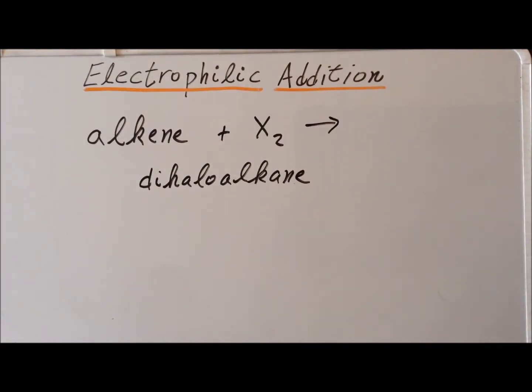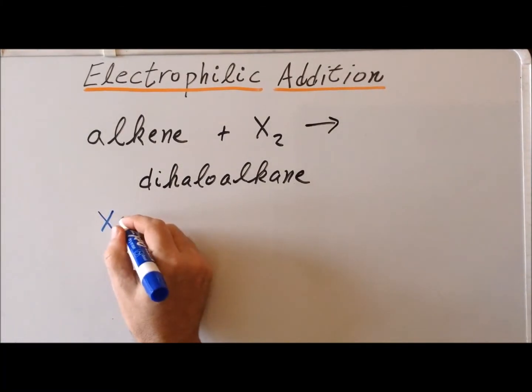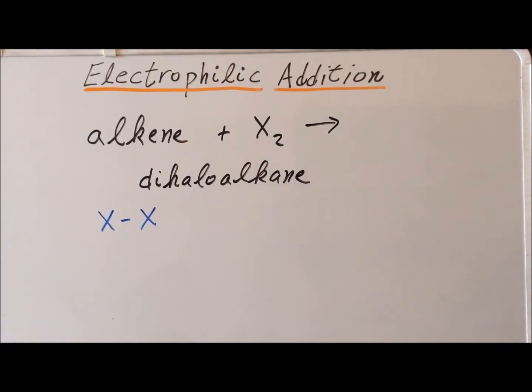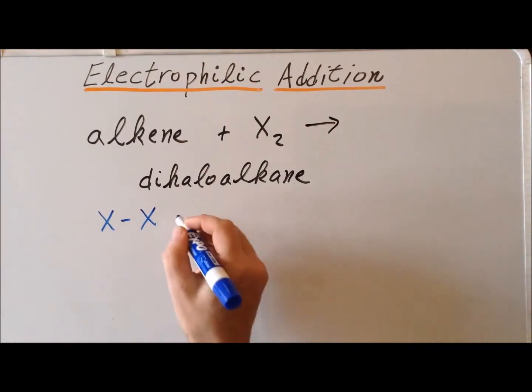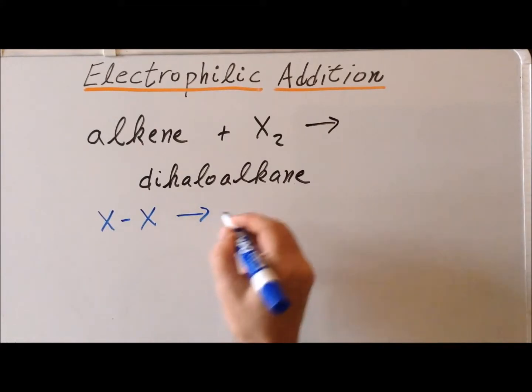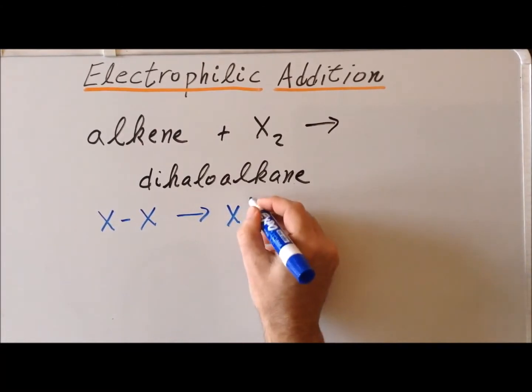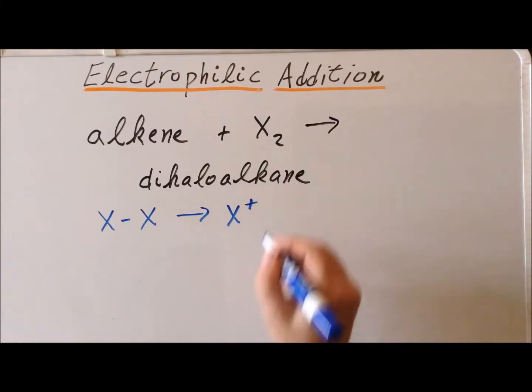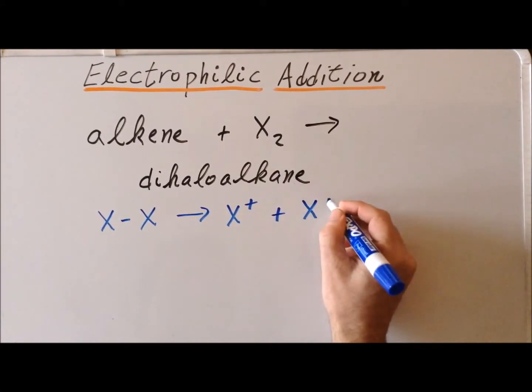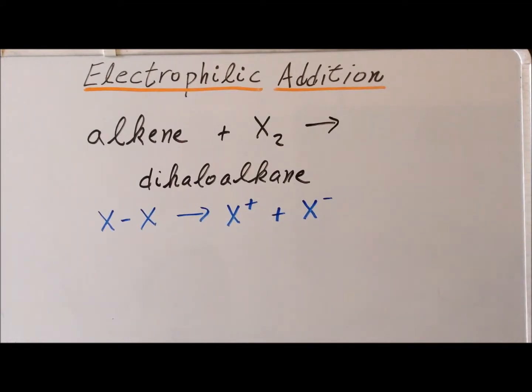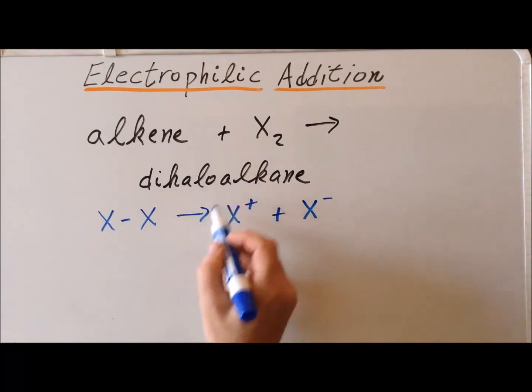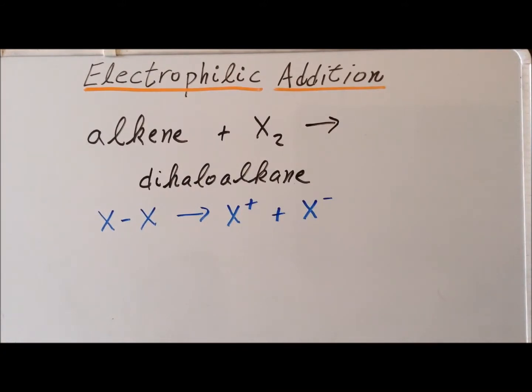A key step in the reaction involves the reaction of the halogen in such a way that we have a heterolytic bond cleavage with one halogen becoming a cation and the other halogen taking the electron pair with it as the halide. The cation halogen, either a chloronium or bromonium ion, will be the electrophile in the reaction and it will attack the carbon-carbon double bond of the alkene.